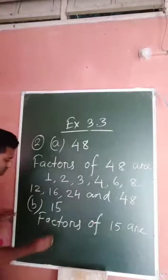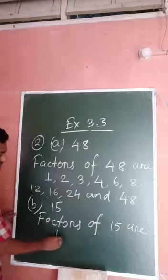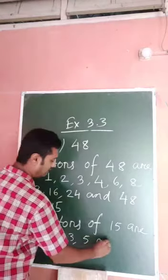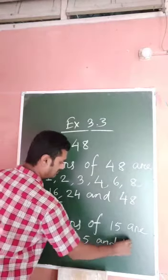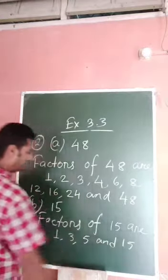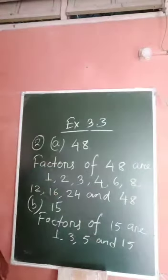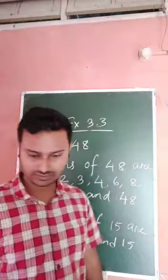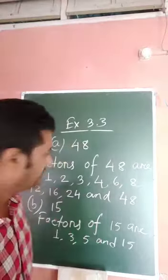For 15, the factors are 1, 3, 5. Next one is 72.